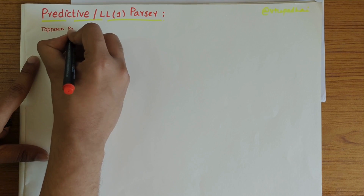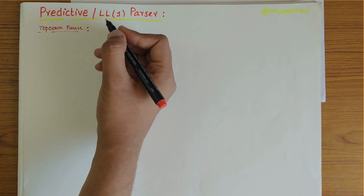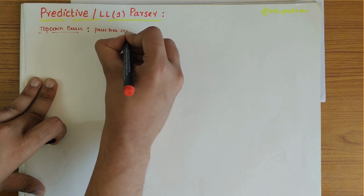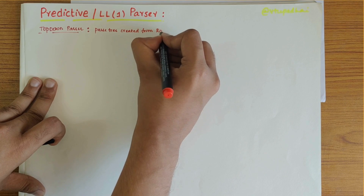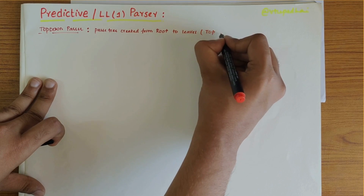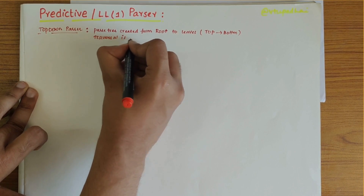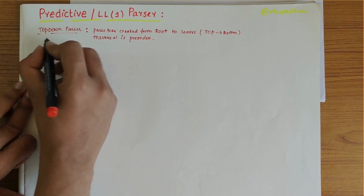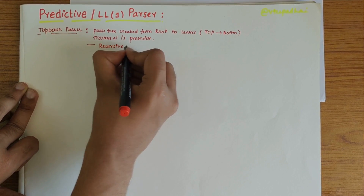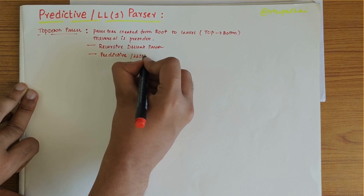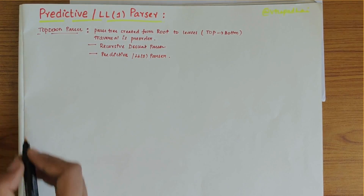In this video we'll be looking into the top-down parser topic, particularly dealing with the predictive or LL1 parser. In a top-down parser, the parse tree is created from the root to the leaf nodes, that is from top to bottom. The traversal of the parse tree is pre-order. Top-down parsers can be classified as recursive descent parser and predictive or LL1 parser.